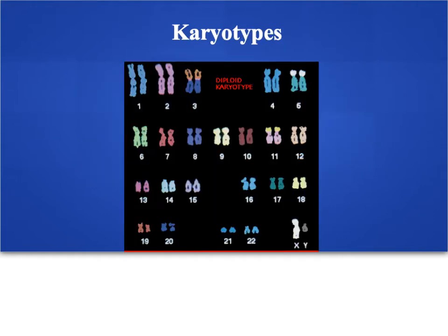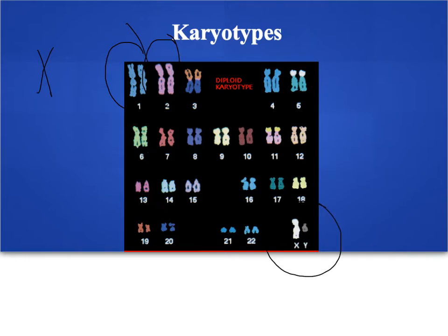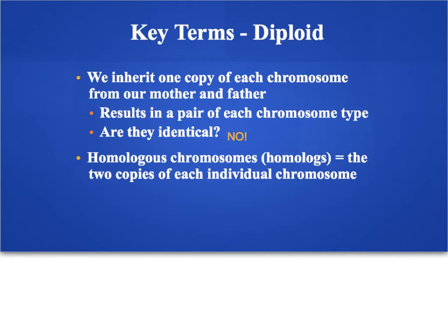In this picture it becomes much more clear that we are a diploid organism. Here the chromosomes are already replicated so they're in their X form, and you can see we have two copies of chromosome 1, two copies of chromosome 2, and so on, all the way down to the sex chromosomes where we have a copy of X and a copy of Y. You might be wondering why we have two copies of each chromosome — the answer is that we inherit one copy from our mother and one copy from our father.